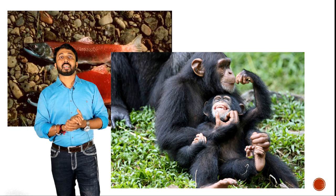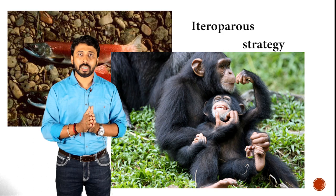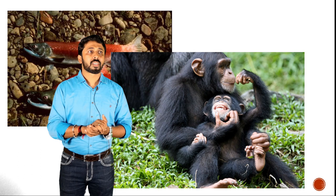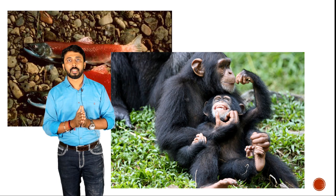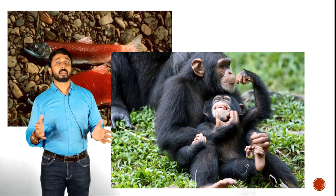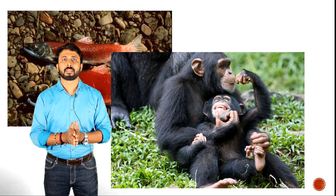In contrast, there is another strategy known as iteroparity. We humans are included in that. In iteroparous conditions, organisms can reproduce many times in their life. Human beings and other higher animals can reproduce many more times. These are the strategies for how many times an animal reproduces, and we are discussing all of this in terms of evolution.